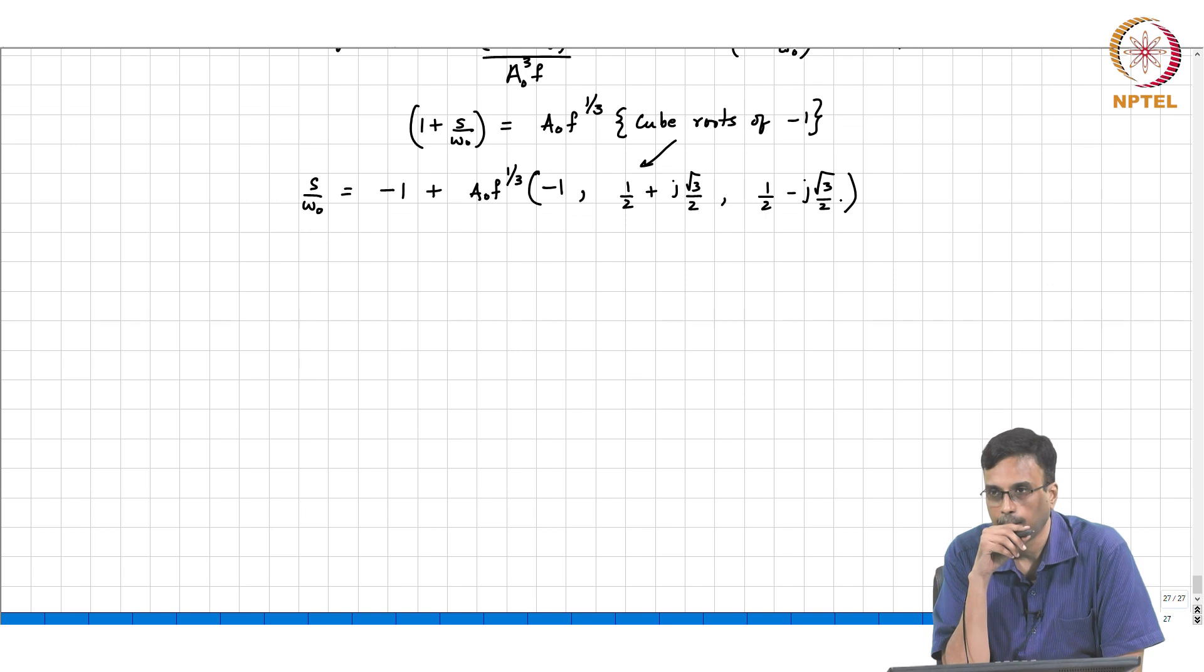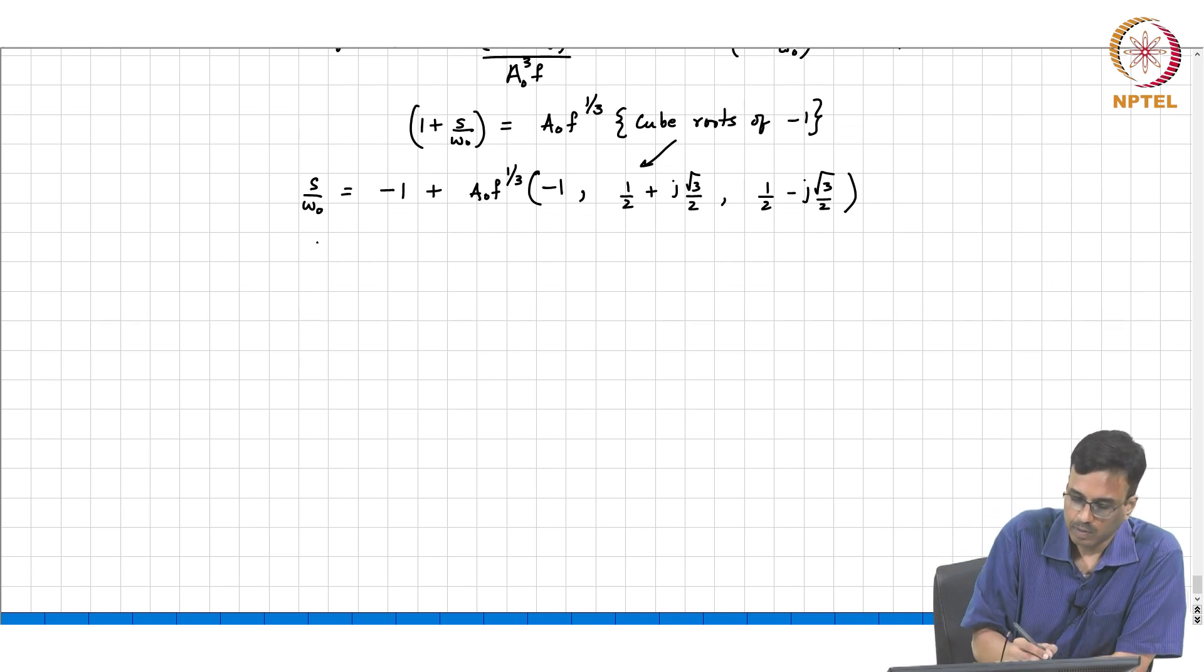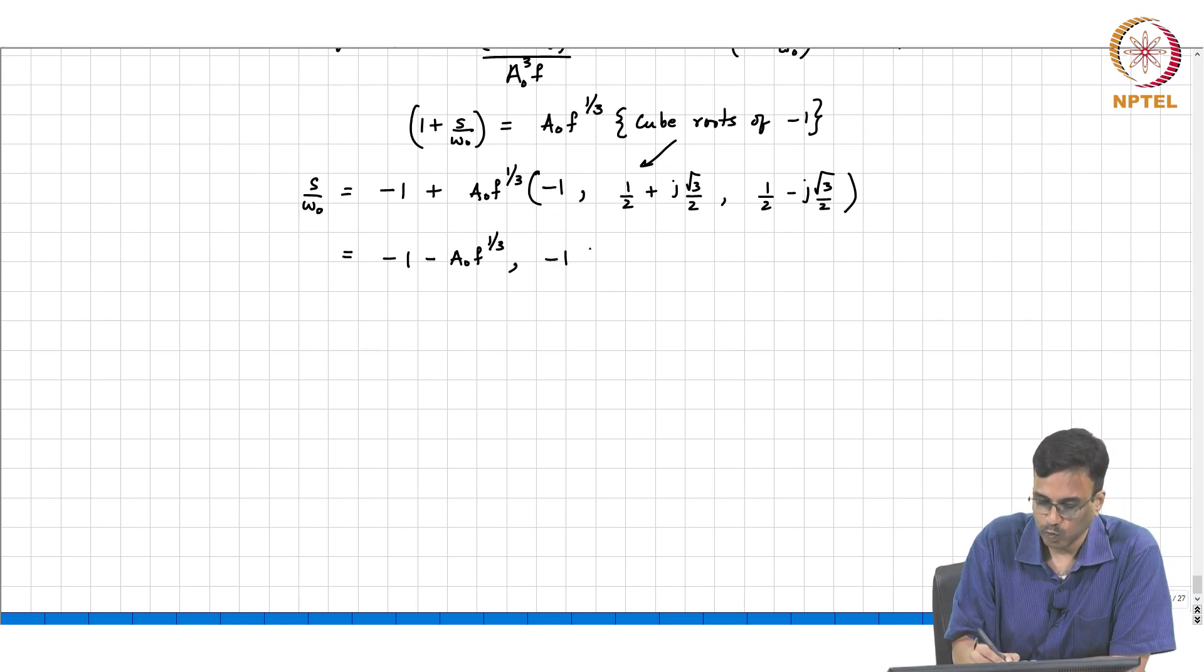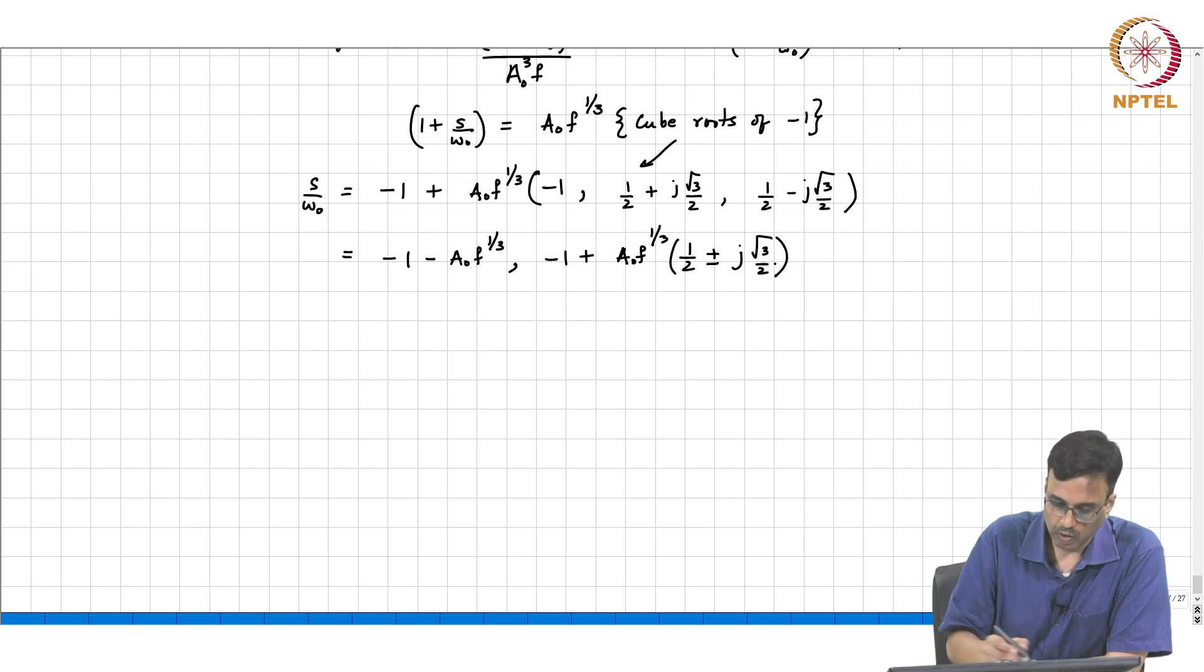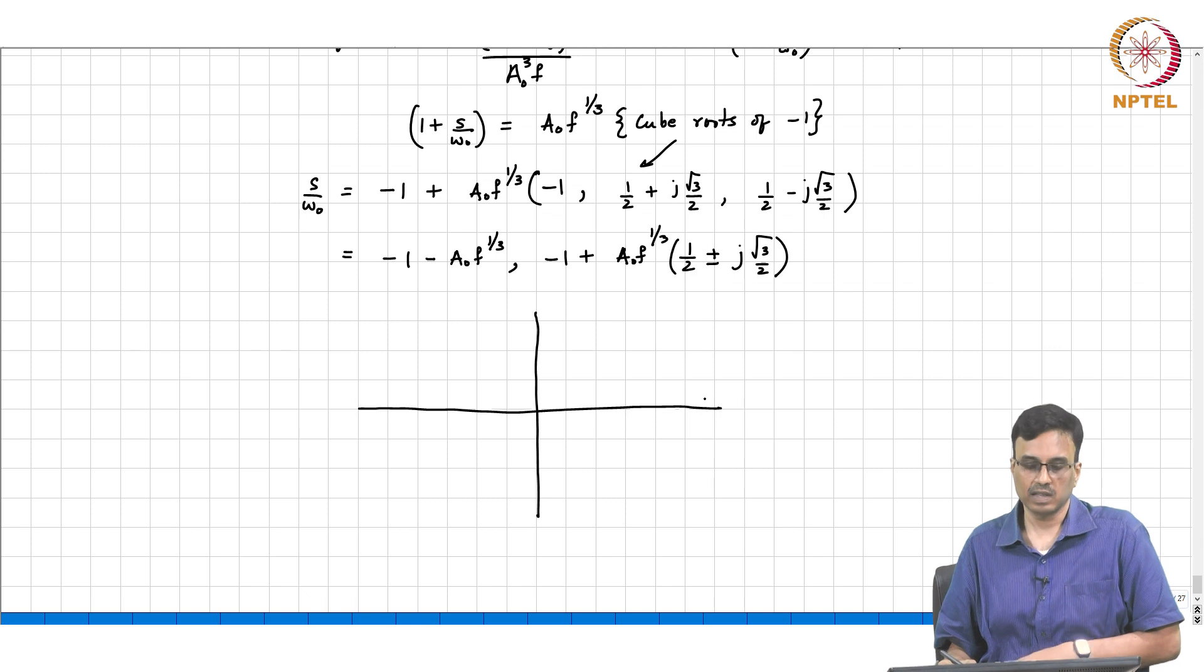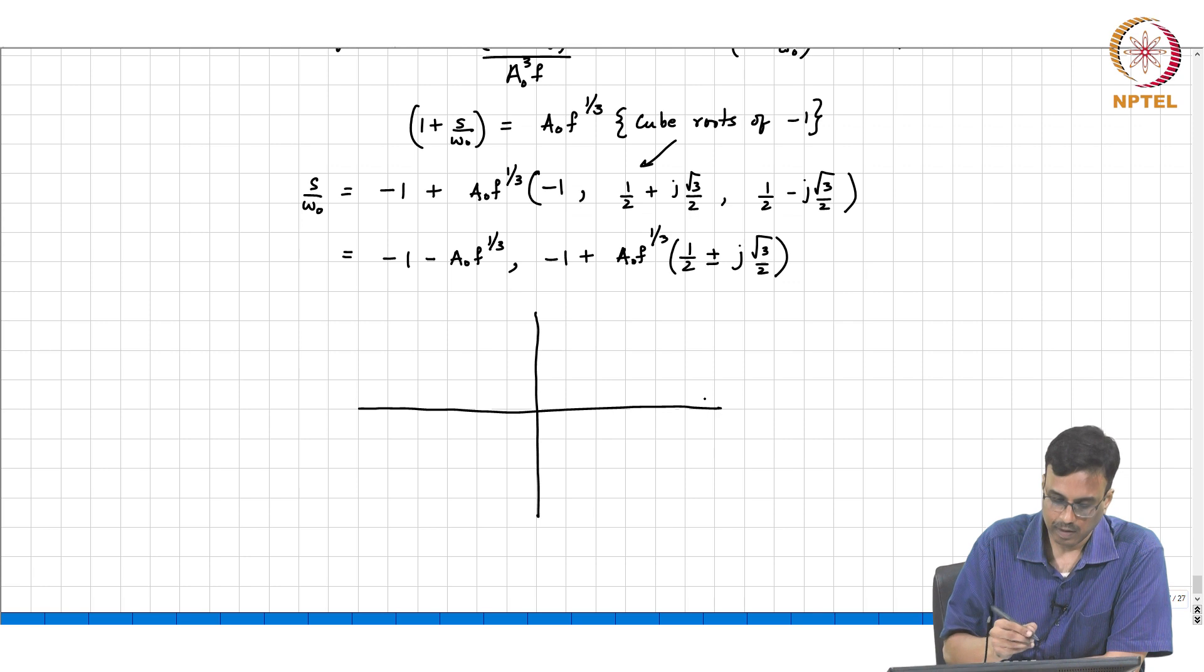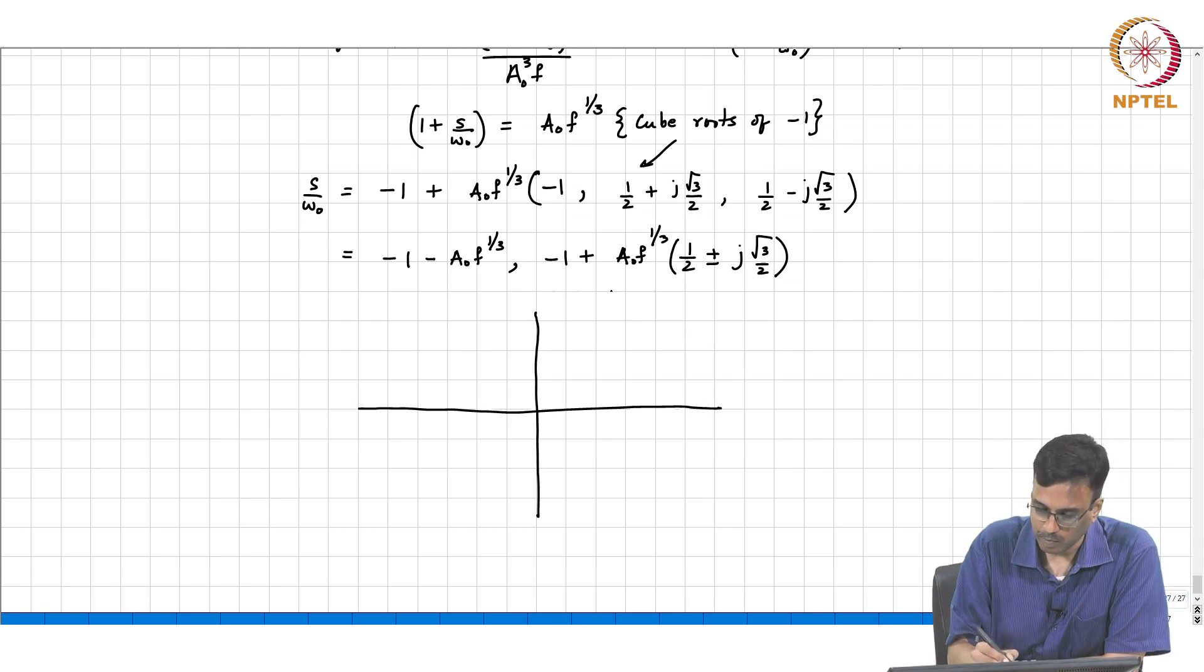The poles are therefore at minus 1 minus a naught f to the one-third, minus 1 plus a naught f to the one-third times half plus minus j root 3 by 2. If you plot the locus of these roots as a naught is varied, for a naught tending to 0, where are the roots? On the negative real axis. So s by omega naught will basically be at - this is plotting s by omega naught so I don't have to keep carrying omega naught everywhere. This is basically going to be the 3 poles at minus 1.